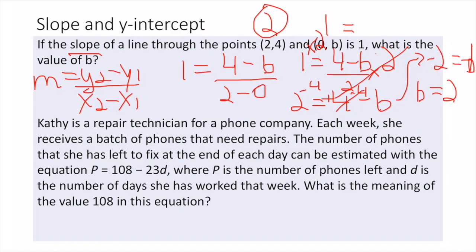We're used to seeing y = mx + b form. Here p is really y and d is really x. So if we rewrite it, it would be p = -23d + 108.